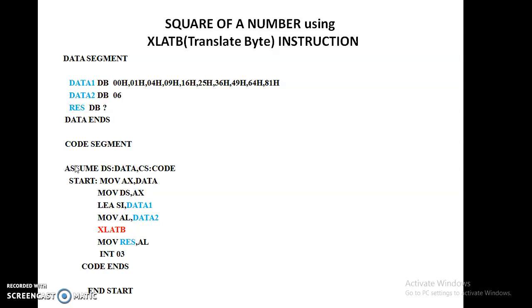Coming to the code segment part, here we have DS and CS. DS is the data segment register and CS indicates the code segment register. The starting address of our data segment is stored in the DS register, and the starting address of our code segment is stored in the CS register. The next two instructions are called initialization of the data segment register and are common in any program. Here, we are initializing the data segment register with the help of the accumulator AX. After the execution of the MOV DS, AX instruction, our data segment register contains the starting address of the data segment.